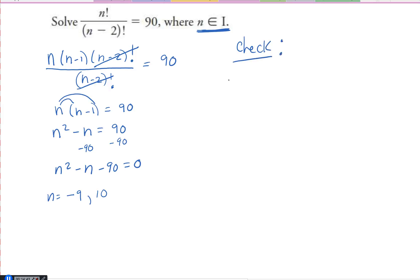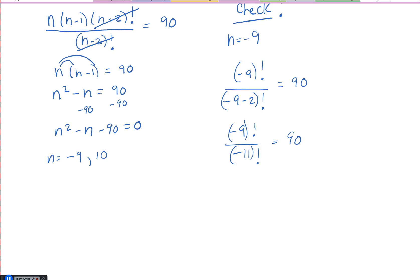How do we check? Substitute. So let's check n equals negative 9. So I've got negative 9 factorial divided by negative 9 subtract 2 factorial is equal to 90. That would be negative 9 factorial divided by negative 11 factorial is equal to 90. And at this point, you should be recognizing that we're going to have no solution.